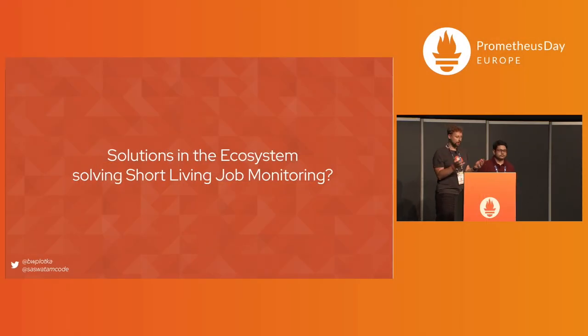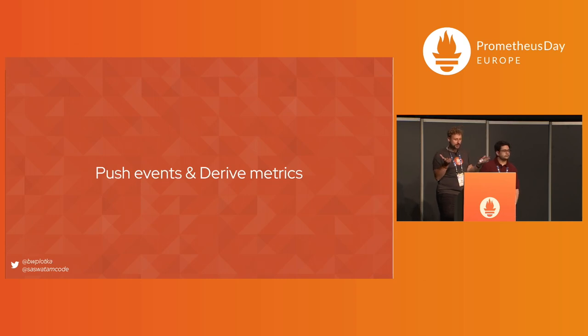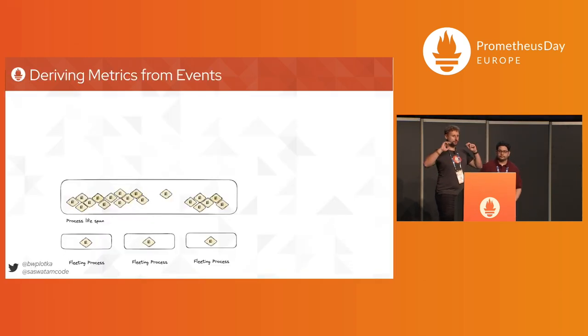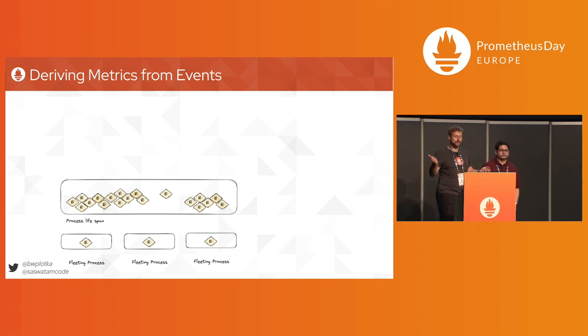So what if you're a Prometheus user with a lot of fleeting jobs — like serverless functions, batch jobs, or any short-living processes? Initially, there are two categories of solutions. The first is simply relying on event-based observability and deriving metrics from it. As we mentioned, processes are full of events, and some of them are useful to observe and count — so we can create alerts, monitor dashboards, and really use that for observability. Particularly for batch jobs and fleeting processes, they are mostly about single events, so it feels natural to have observability that collects logs of events.